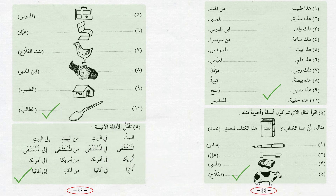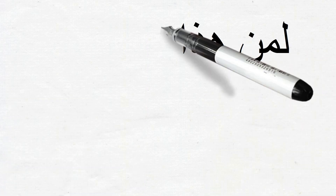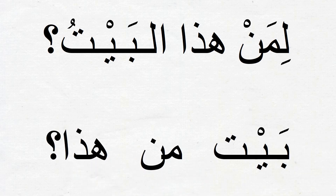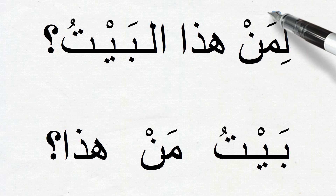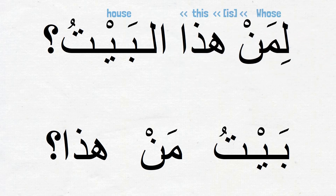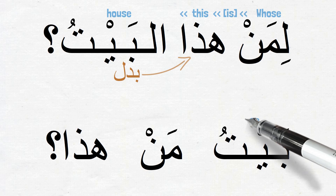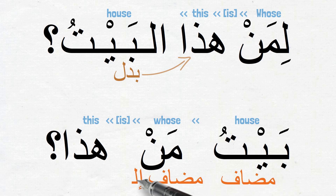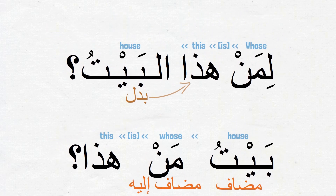Before we finish, I would like you to note the difference between these two questions: لمن هذا البيت and بيت من هذا. The first question لمن هذا البيت translates as 'whose is this house' — here البيت is coming as بدل for هذا. The second question بيت من هذا translates as 'whose house is this' — here بيت من is an إضافة combination, so بيت is مضاف. Although there is no big difference in meaning, it is good to observe the structural difference, in particular the function that البيت is playing in these two sentences. Let's end our video here. We'll continue in the next couple of videos, insha'Allah. Assalamu alaikum.